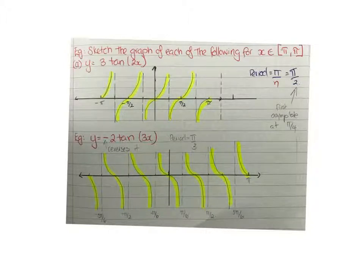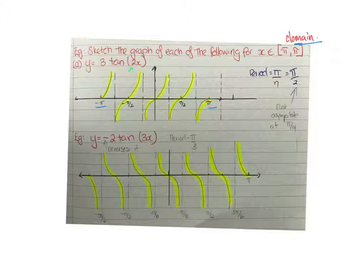It says sketch the graph of each of the following for x is an element, so that's just telling you the domain. We only want to go from negative π up to π, so we're only showing that part of the graph. We should find first the period, so it will be π divided by n. In this case it was 2, so π/2 is the period.